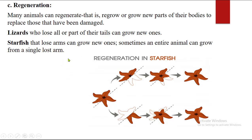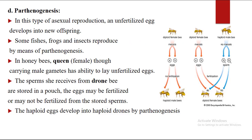But regeneration as a type of reproduction is common in starfish. In starfish, you can see the body is broken down — for example, these are the arms of starfish, usually five arms. Depending on the pattern of breakdown, if a small portion of starfish is broken off, it can just regenerate the lost part. But if it is divided into two almost equal parts, then each part can regrow into a new starfish. So in this sense, regeneration is also a type of asexual reproduction.